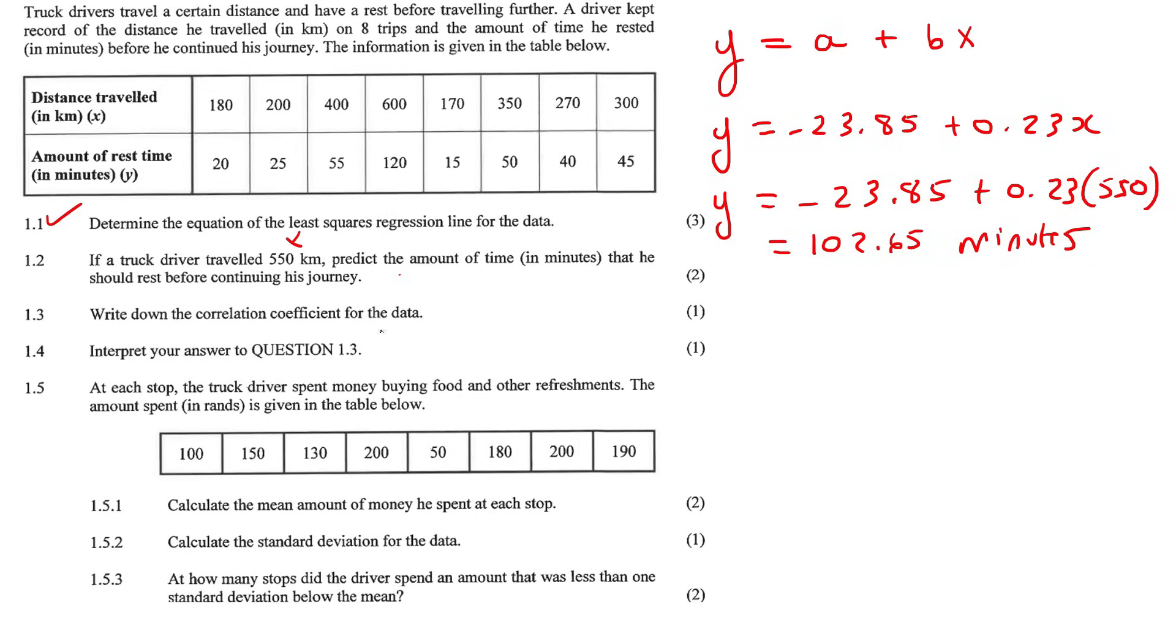Next question, write down the correlation coefficient. Well, we worked that out as R, which was 0.98. Now they're asking you to comment on that. Remember that I've told you that if you get 1 or minus 1, that is a perfect correlation. But anything bigger than 0.8 is going to be strong.